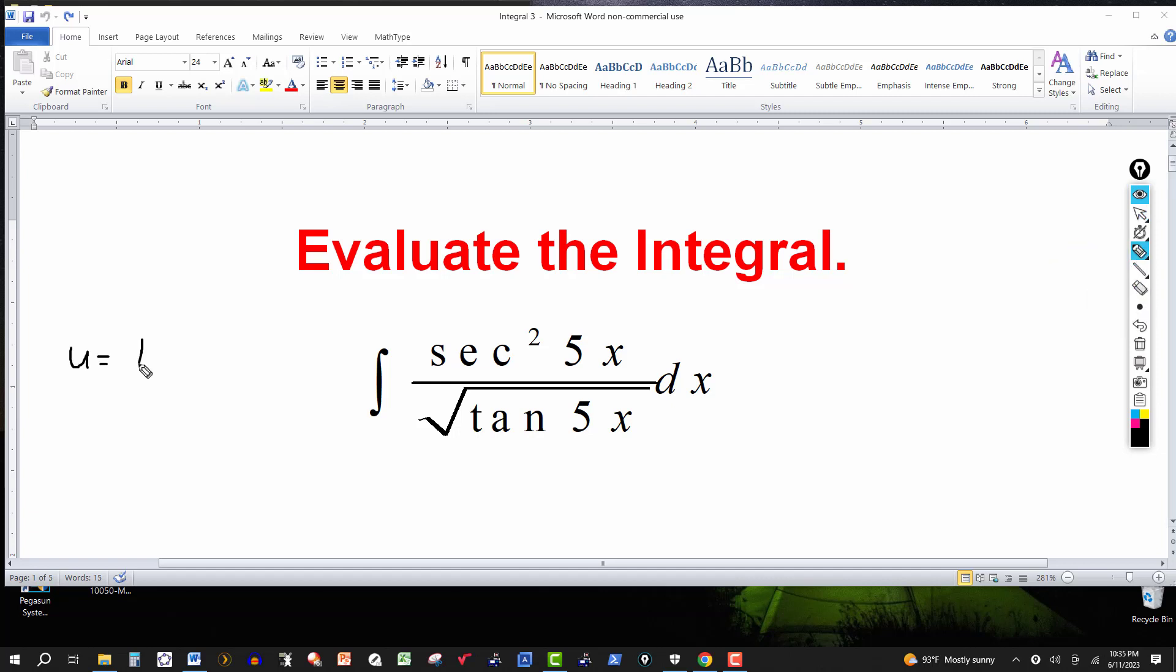So we let u equal the tangent of 5x. And computing the derivative, start off with du here on the left side and the derivative of tangent is secant squared of 5x. And using the chain rule, the derivative of 5x is 5. So that multiplies the secant squared and then this is dx.